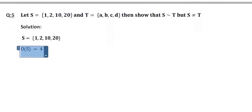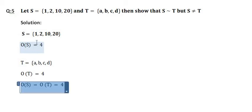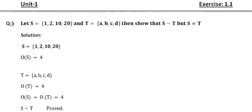You can see the total number of elements in set S are 4, and the total number of elements in set T are also 4. So we can say that S is equivalent to T because the total number of elements in S and T are equal. Therefore, S is equivalent to T.